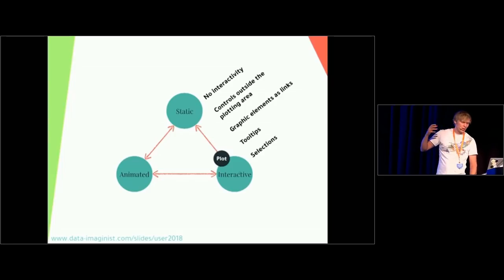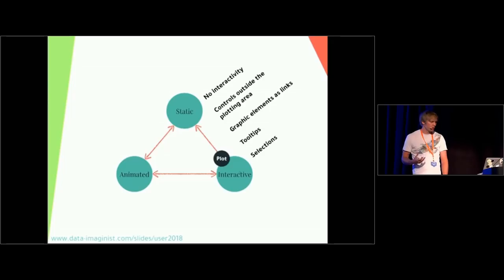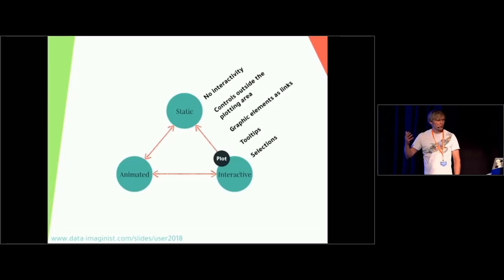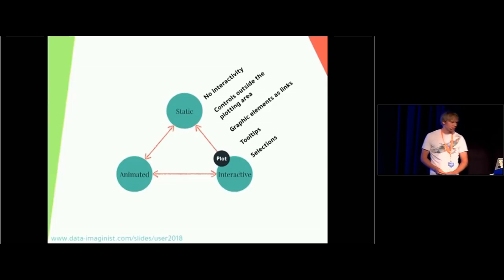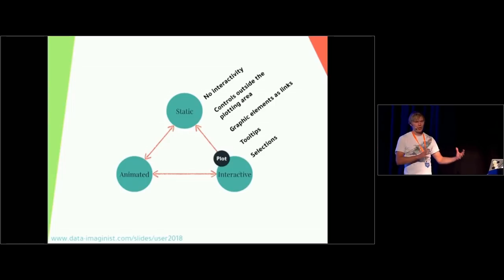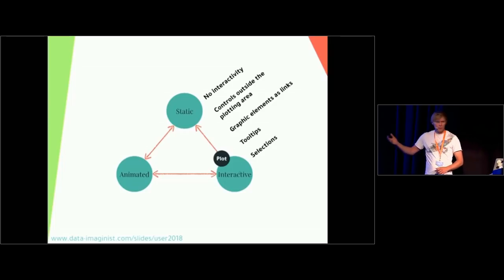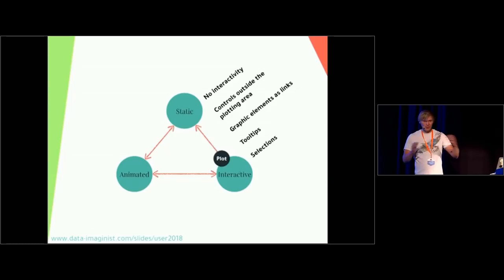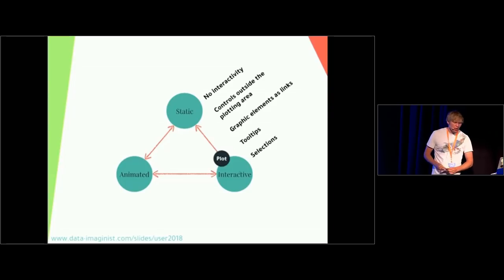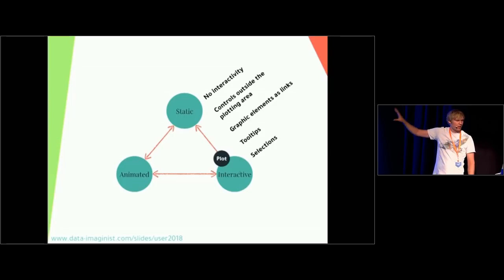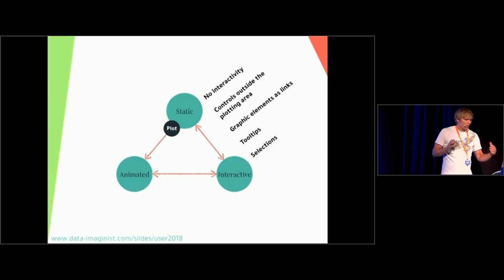It's not completely well defined, but I hope I can convince you that we can talk about a plot being more interactive than another. We can go from no interactivity to some sort of controls outside of your plot — that's interactivity without interacting directly. We can go further with graphic elements as links, then tooltips where we have a change in visual representation overlaid on your plot, and full-on selection with brushing and linking. But bear in mind that none of these things necessarily imply any animation. You can have tooltips without a fancy fade in and fade out. It's simply just interactivity.